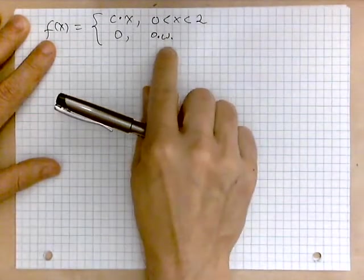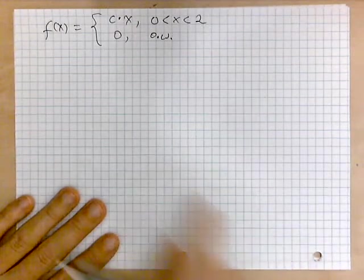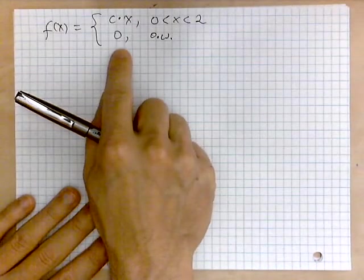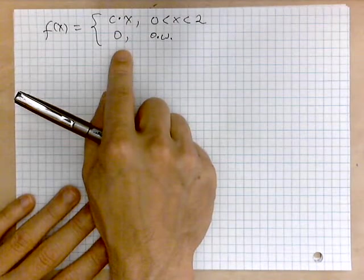So o.w. represents otherwise, that phrase. So this is just a piecewise defined function. To turn it into a probability density function we have to be sure that the area under the curve equals 1.